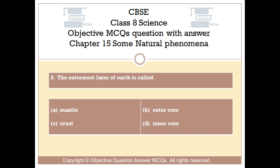Question number 8. The outermost layer of earth is called: Option A, Mantle. Option B, Outer core. Option C, Crust. Option D, Inner core.